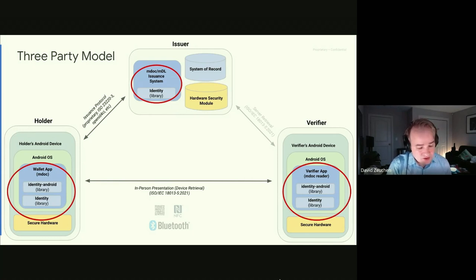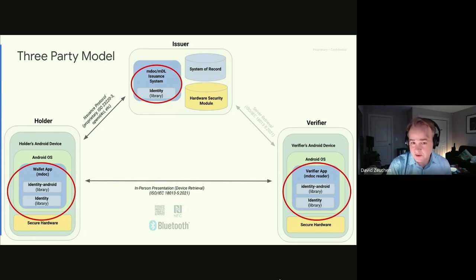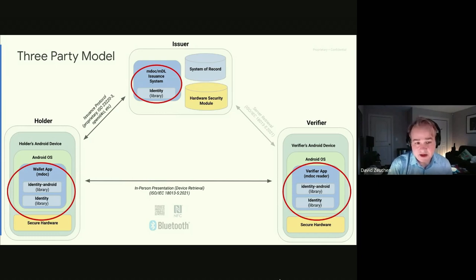The library is used inside the wallet app, which is part of the OS and the device. To operate securely you need secure hardware — in Android's case, Android Keystore. It's also used on the verifier side in the MDoc Reader app to implement the device retrieval protocol from 18013.5. It can also be used on the issuance side, since the primitives are not Android-specific.